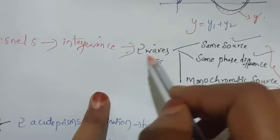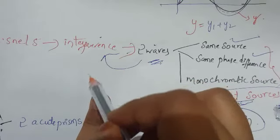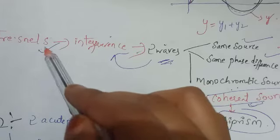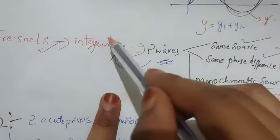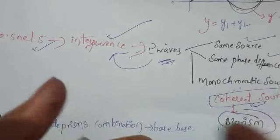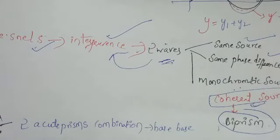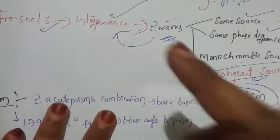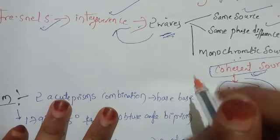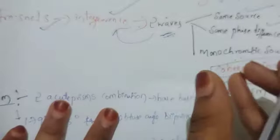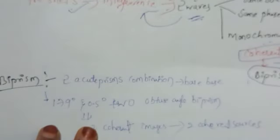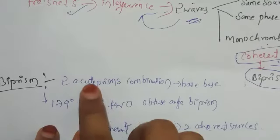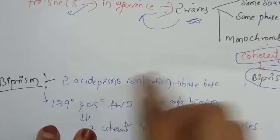So that waves use interference. This is the Fresnel biprism — Fresnel used biprism, and interference produces interference pattern. Now, we have a link to the biprism. Basically, the biprism is two acute angle prisms.